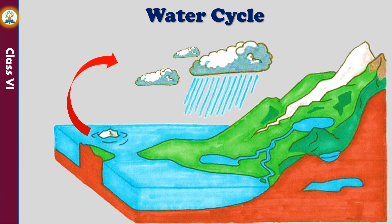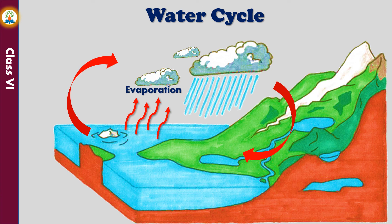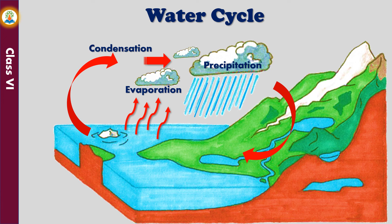The water cycle is the process in which water moves from the land to the sky and back again. Water evaporates from the surface of water bodies; the rising water vapor cools down and condenses to form water droplets, which collect together to form clouds. As more water vapor cools into the clouds, the droplets become larger until the clouds become too heavy and water falls as rain. The process by which water vapor condenses and falls as rain or snow is known as precipitation. This rain water collects to give rise to different water bodies, which then evaporate due to the heat of the sun, and the cycle continues.